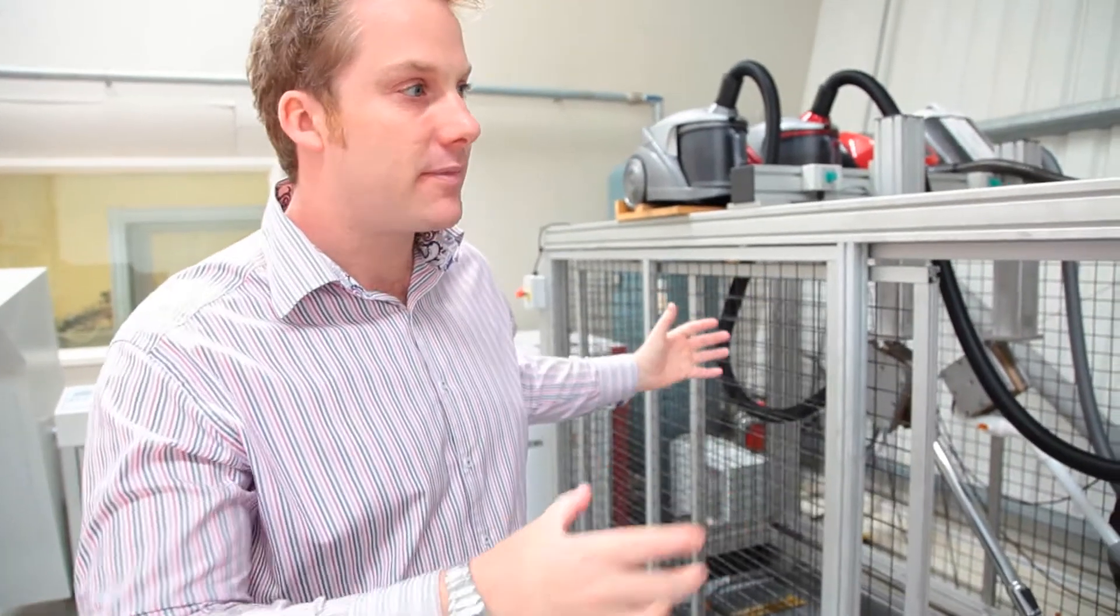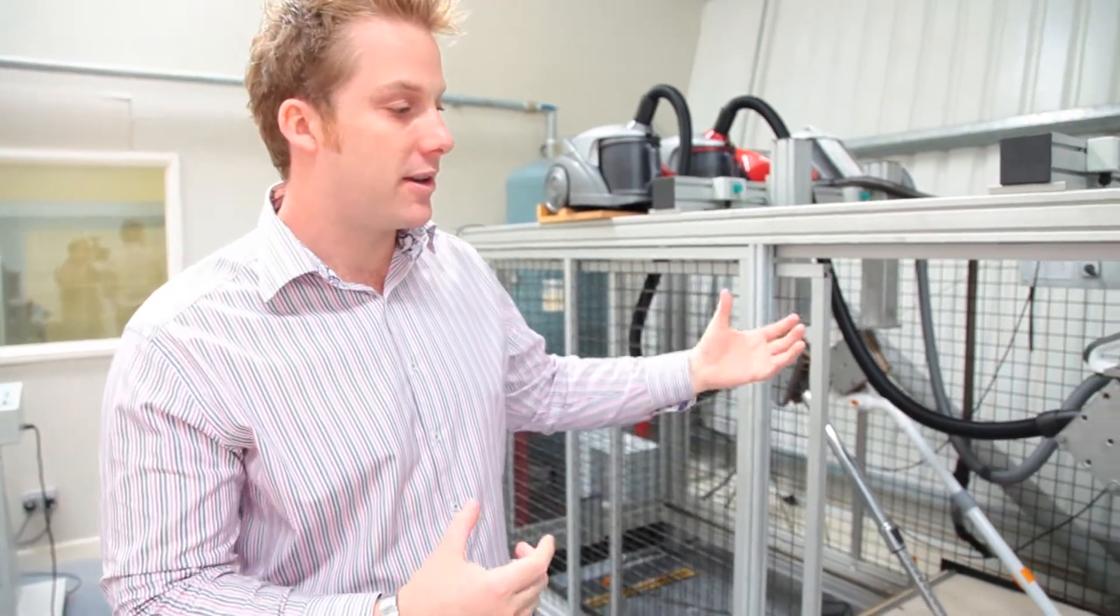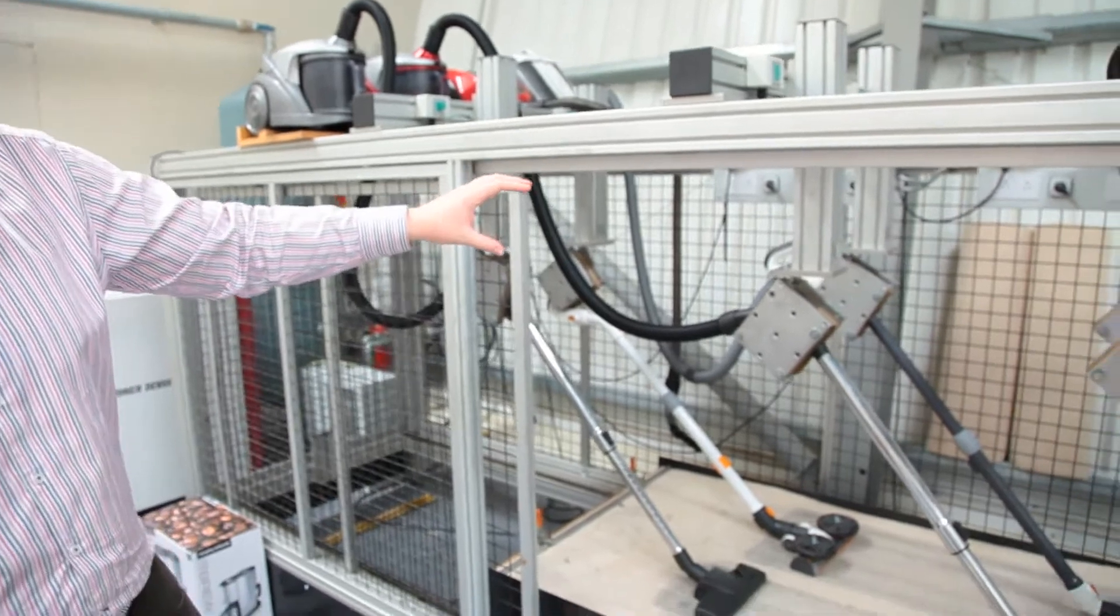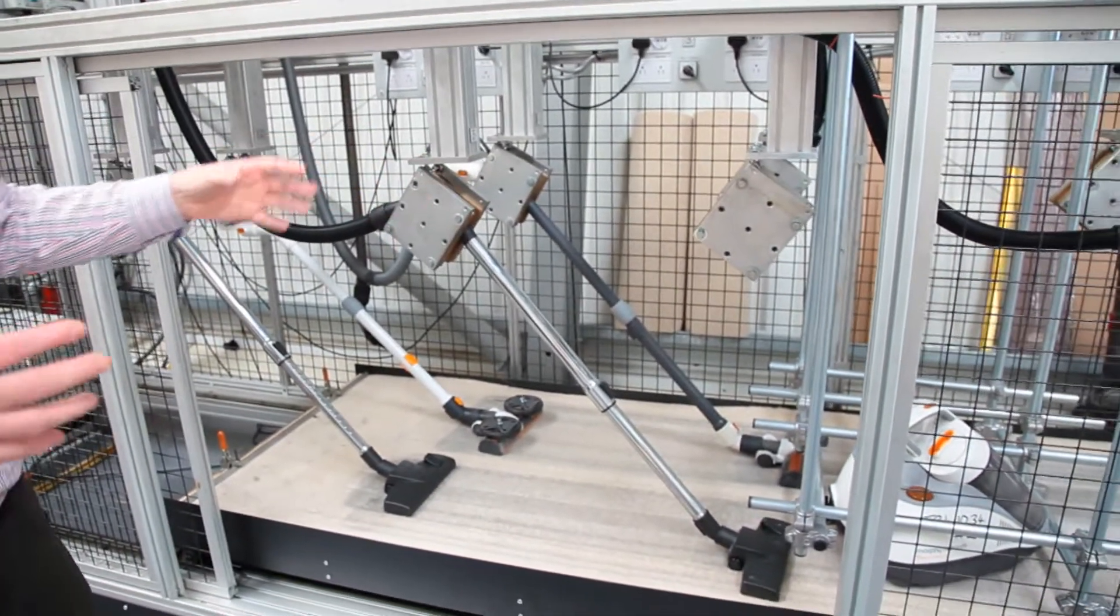This is our moving floor and the purpose of this is to life test the floor heads of both cylinder cleaners and upright cleaners. We can fit 8 products on them here at any one time and also modify the machine to do other tasks.